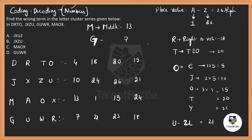Now let's find the logic using numbers. For cluster D-R-T-O: D=4, R=18, T=20, O=15. The differences are: 4 to 18 is +14, 18 to 20 is +2, 20 to 15 is −5. So the pattern is +14, +2, −5. This is far simpler than counting alphabets.